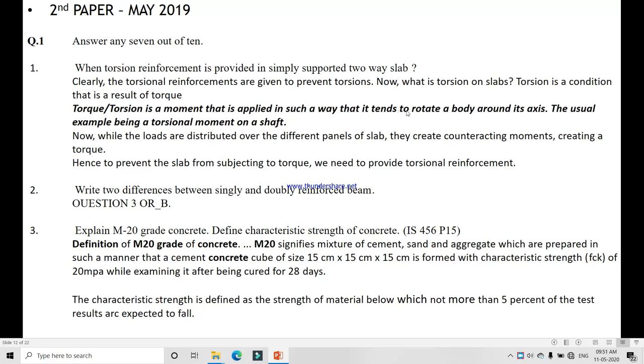Torsion is a moment that is applied in such a way that it tends to rotate a body around its axis. The usual example being a torsion moment on a shaft. Why we are providing torsion reinforcement? It is for counteracting the moment. If one direction moment will be acting, then torsion moment will be applied counterclockwise, so the moment will be neglected and the structure will be safe.